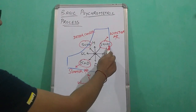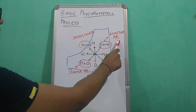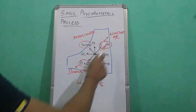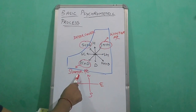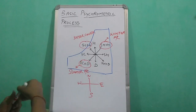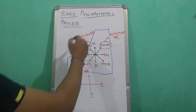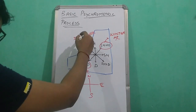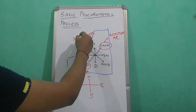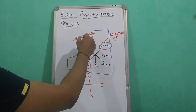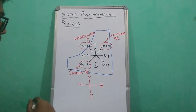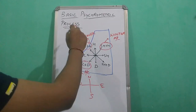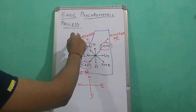The northwest condition is known as the winter AC condition. The southeast condition is also known as the summer AC condition. And the adiabatic saturation process condition is known as the desert cooler condition, also known as the adiabatic saturation process.